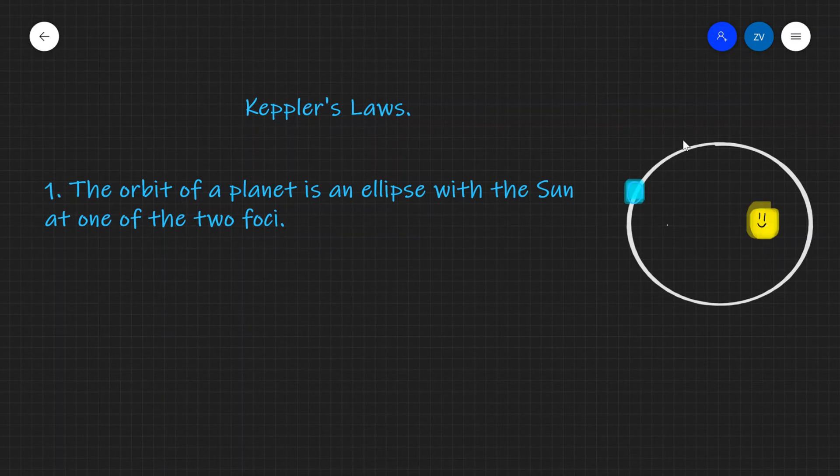So this is why the statement about the orbits being circular at the very start of this video was wrong, because the orbit of a planet is an ellipse with the sun at one of the two foci.